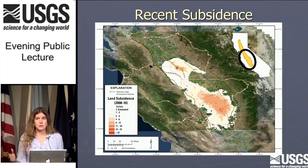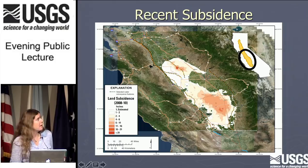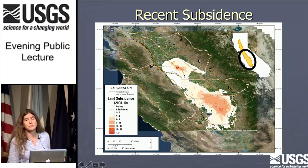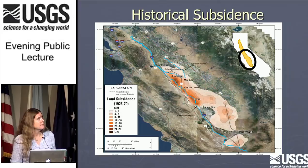Here's a map of more recent subsidence — just a two-year period from 2008 to 2010, largely a drought period. A large part of the valley is impacted by at least an inch of subsidence. Where it's pink, it's at least an inch, and as much as 21 inches. Almost a foot a year was happening. To give some perspective on the historical subsidence versus this more recent subsidence: historically it was mostly on the west side, and now it's sort of moved to the east a little bit.